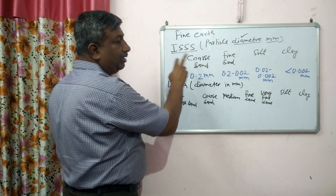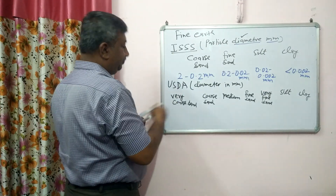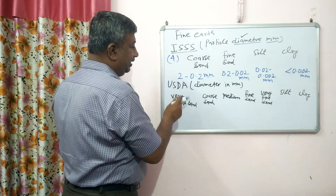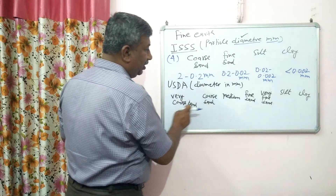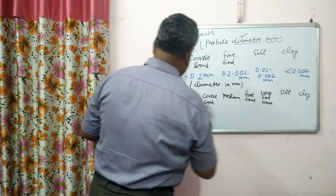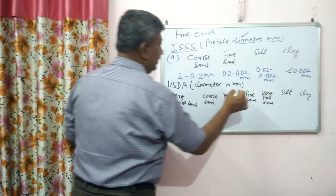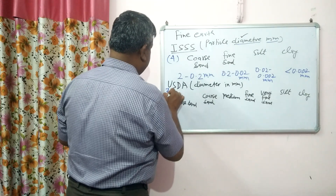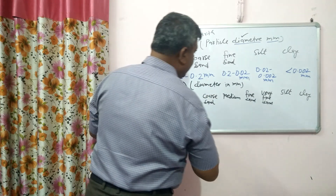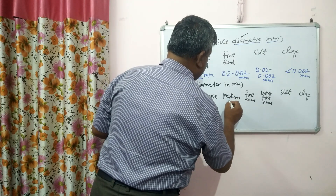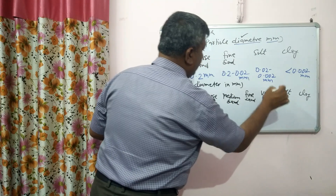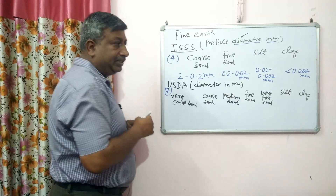So in the ISSS system there are 4 divisions, and in the USDA system there are 7 divisions: very coarse sand, coarse sand, medium sand, fine sand, very fine sand, silt, and clay.